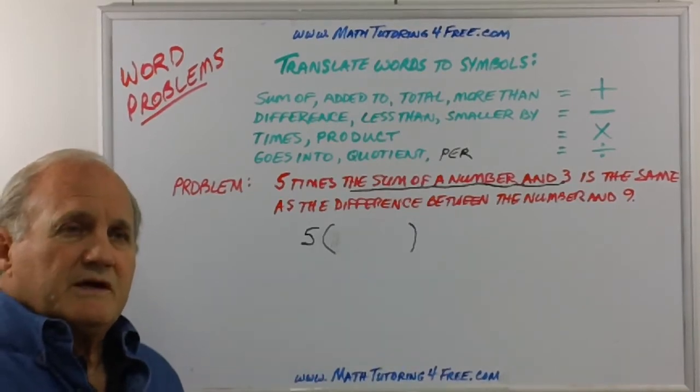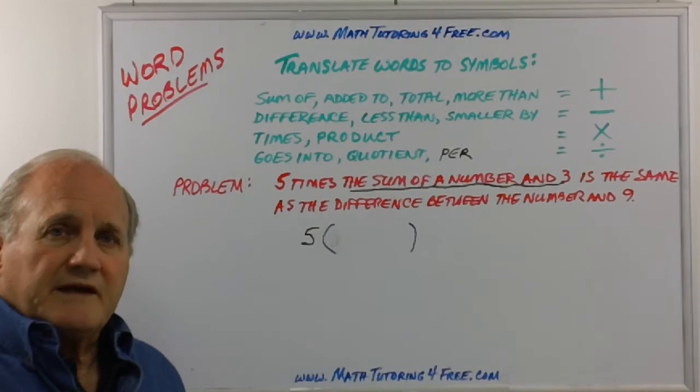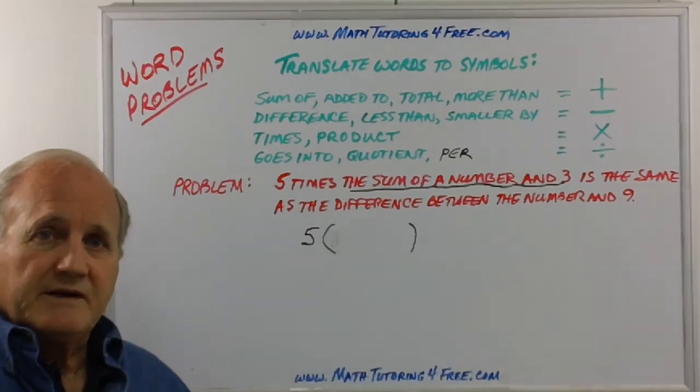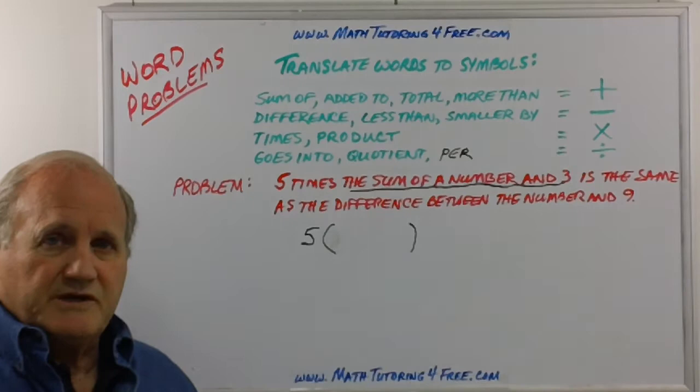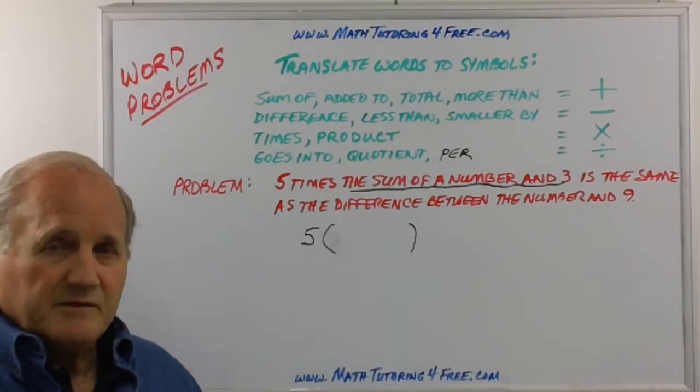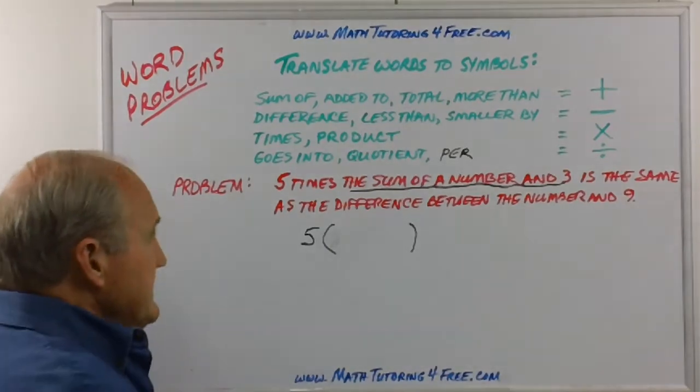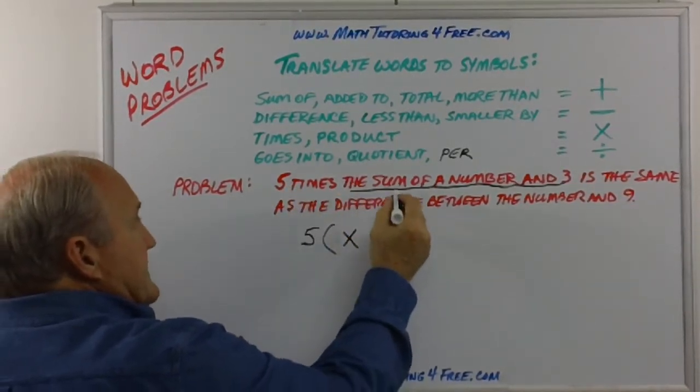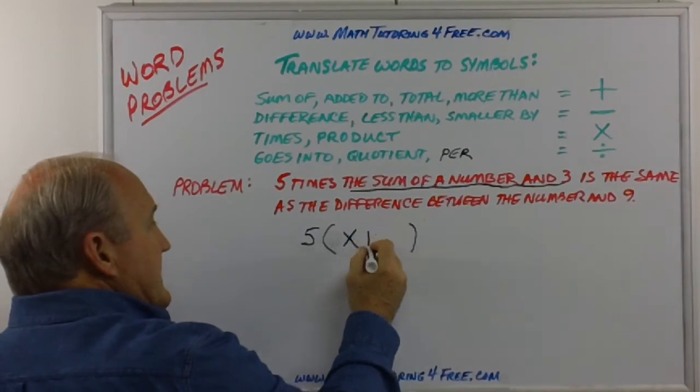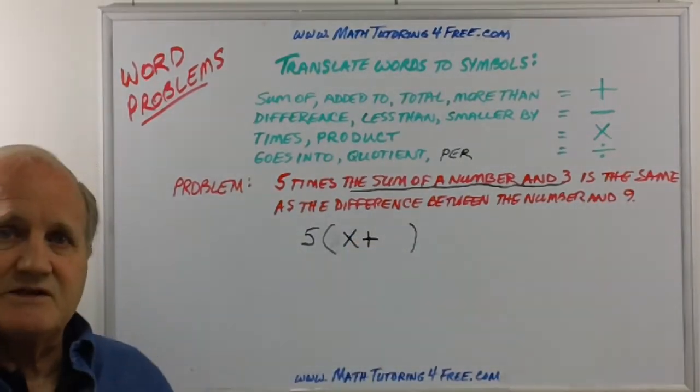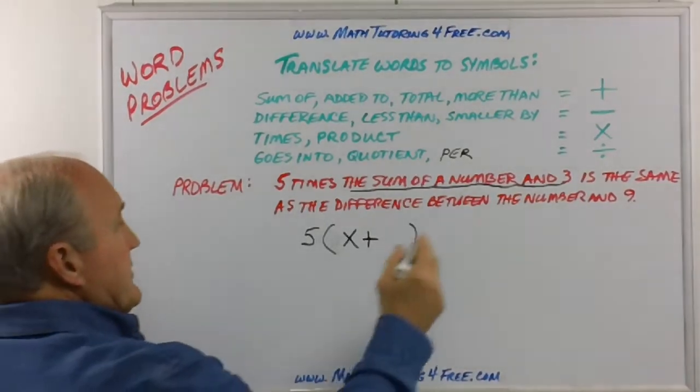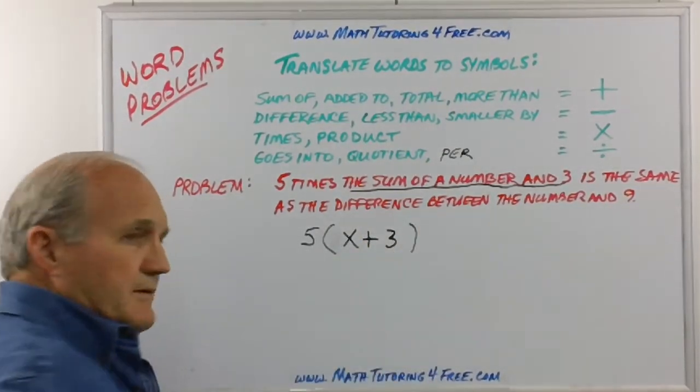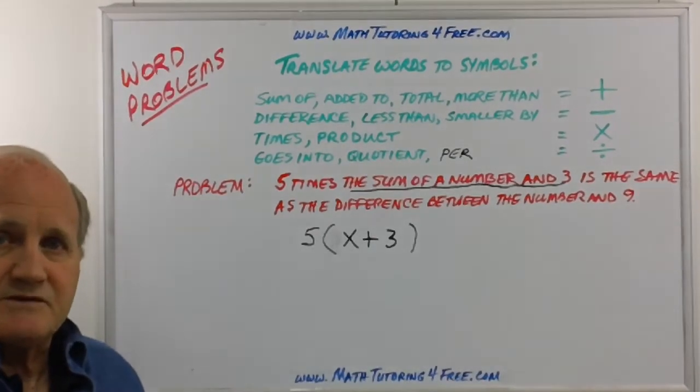Five times the sum of a number and three. Well, one of the things we also need to remember is that it refers to a number, a variable. We're looking at some kind of unknown and what do we do in algebra when we want to indicate a number that we haven't quite figured out what it is yet? We use usually a letter. X comes to mind, Y, but it could be A, B, C, it doesn't matter. But let's in this case say the number is X. And it says five times the sum of a number, so I'm going to say that number plus something. It's the sum of a number and what? The sum of a number and three.